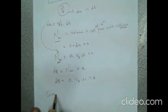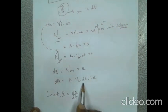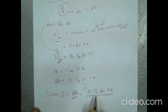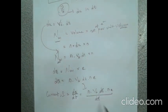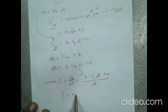We know that current is defined as dQ by dt. Therefore, I equals A into VD into dt into n into e, divided by dt. The dt terms cancel, giving us the result: I equals n e A VD. This is the expression for electric current in terms of drift velocity.